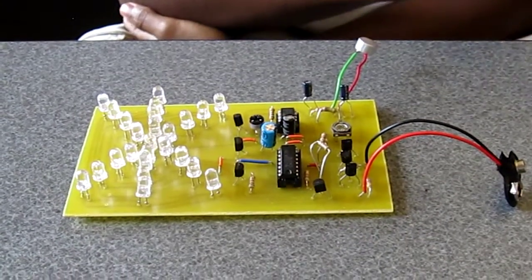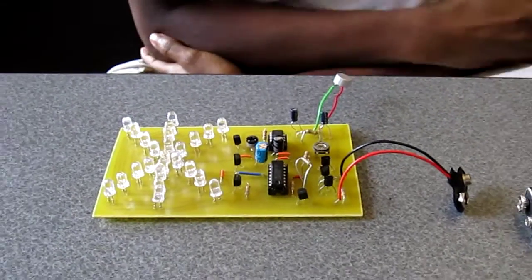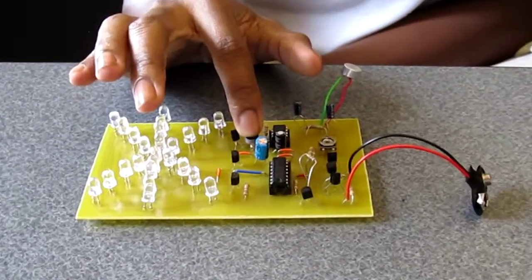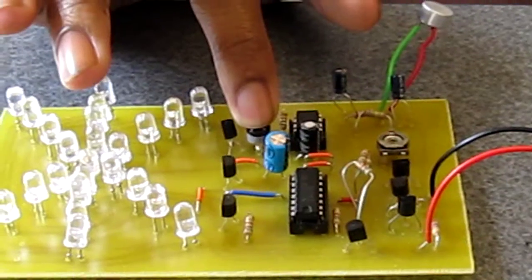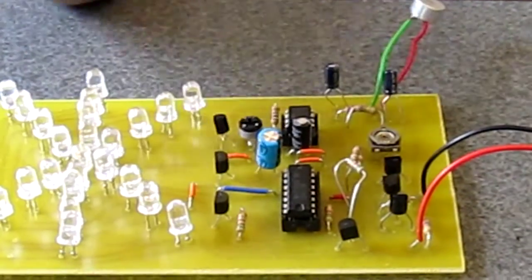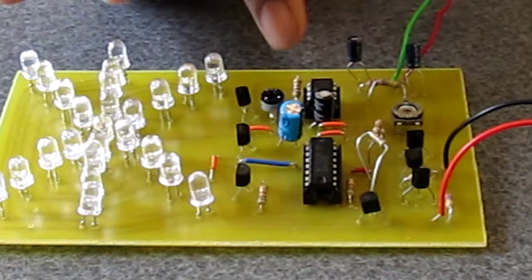This right here is a horizontal trimmer resistor, which just corrects or trims the amount of resistance within the circuit.